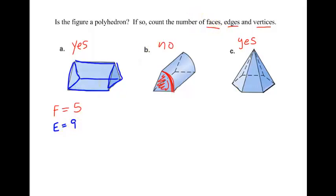Last we see the vertices. How many corners do we have? Well let's just number them. One, two, three. Over here there's four, five, and six. So with our vertices, we've got six. Now we're not going to do B here because it's not even a polyhedron. So let's go to C.